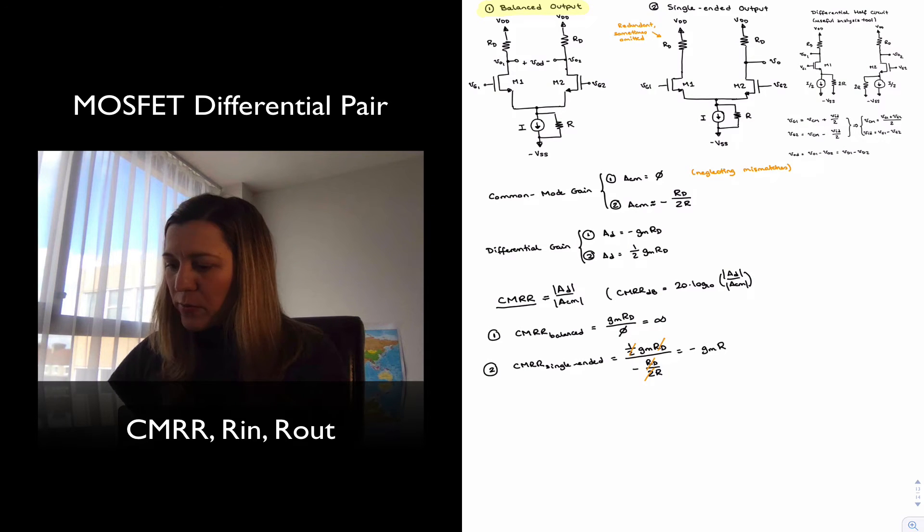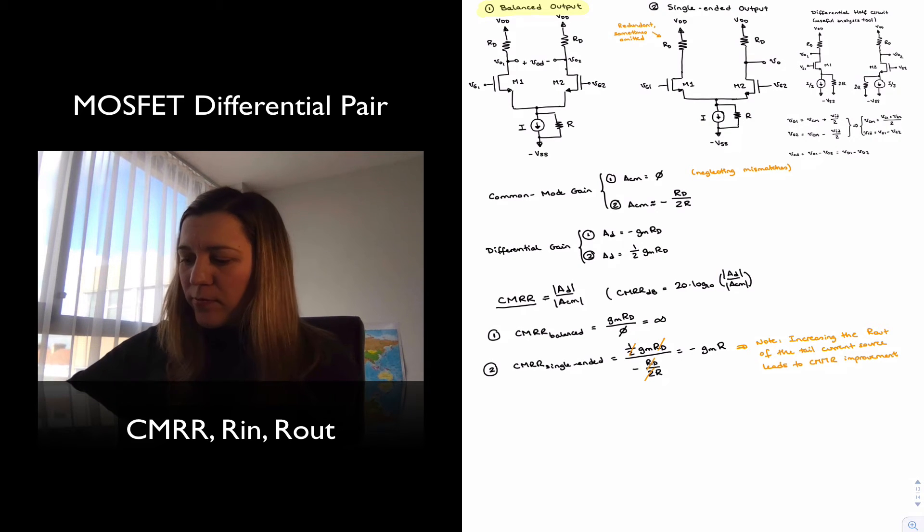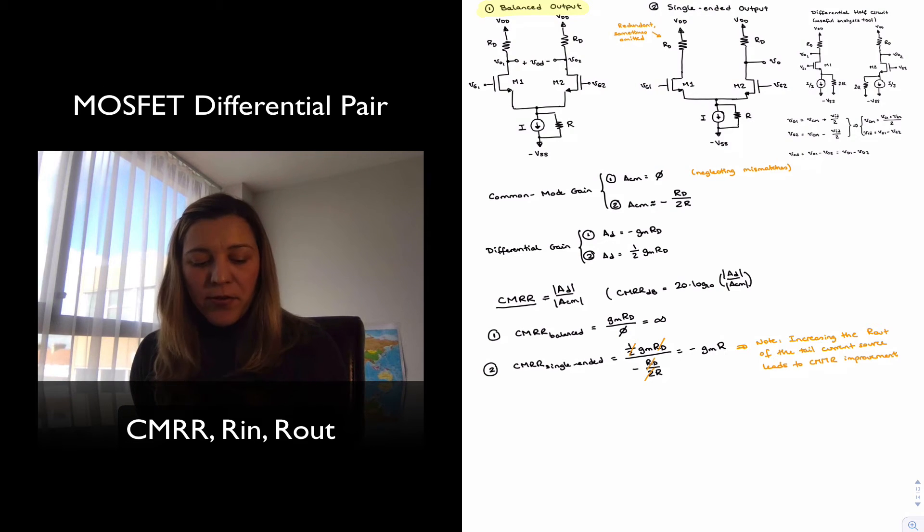So I'm going to make a note here: note, increasing the Rout of the tail current source leads to CMRR improvement.